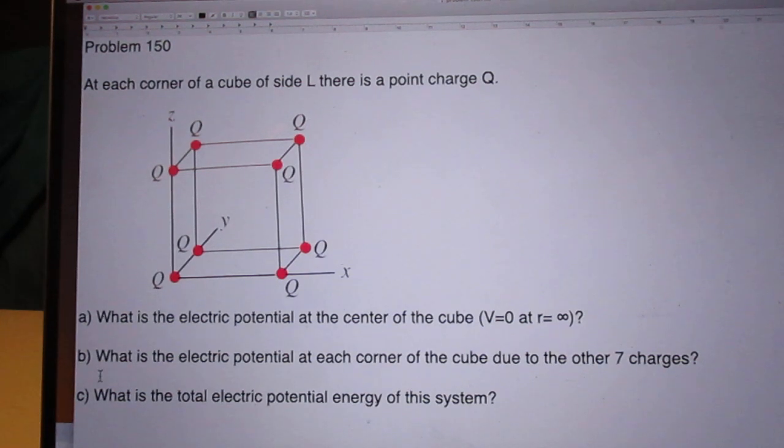Question 2: What is the electric potential at each corner of the cube due to the other 7 charges?